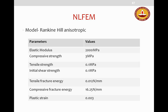The material model for smeared macro-modeling is the Rankine-Hill anisotropic model, with elastic modulus of 2,000 MPa. This model allows different strengths and properties in different directions to account for masonry's anisotropy. Compressive strength was 3 MPa, tensile strength 0.1 MPa, initial shear strength 0.1 MPa, fracture energy 0.012 N, compressive fracture energy 16.25, and plastic strain 0.003.